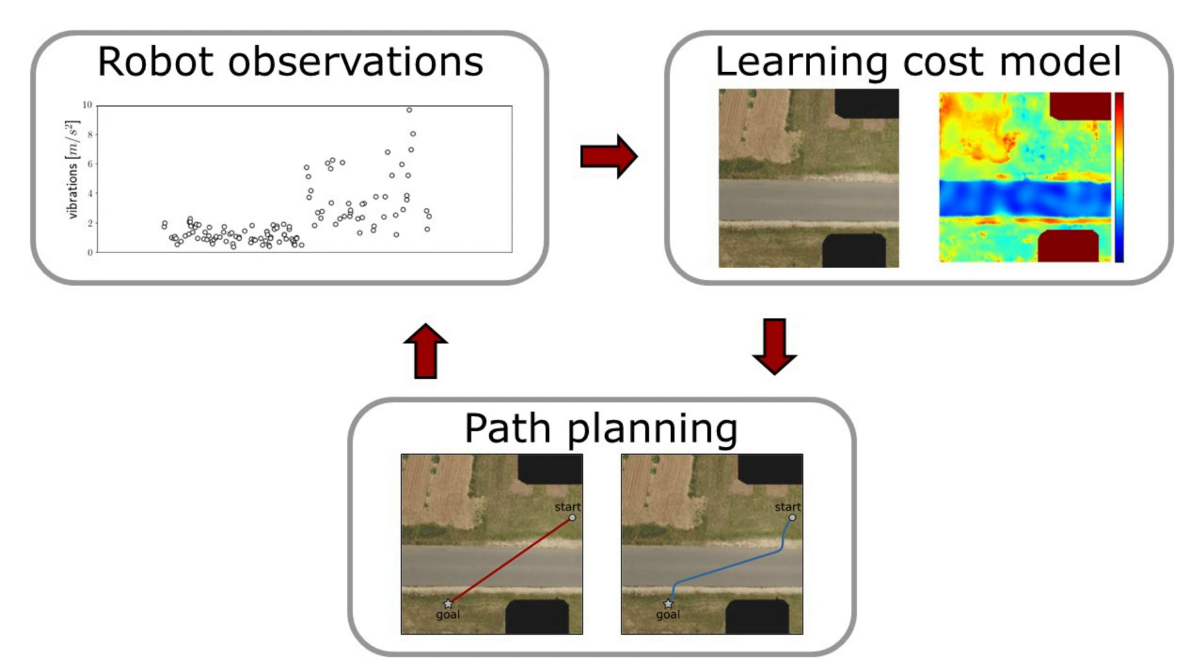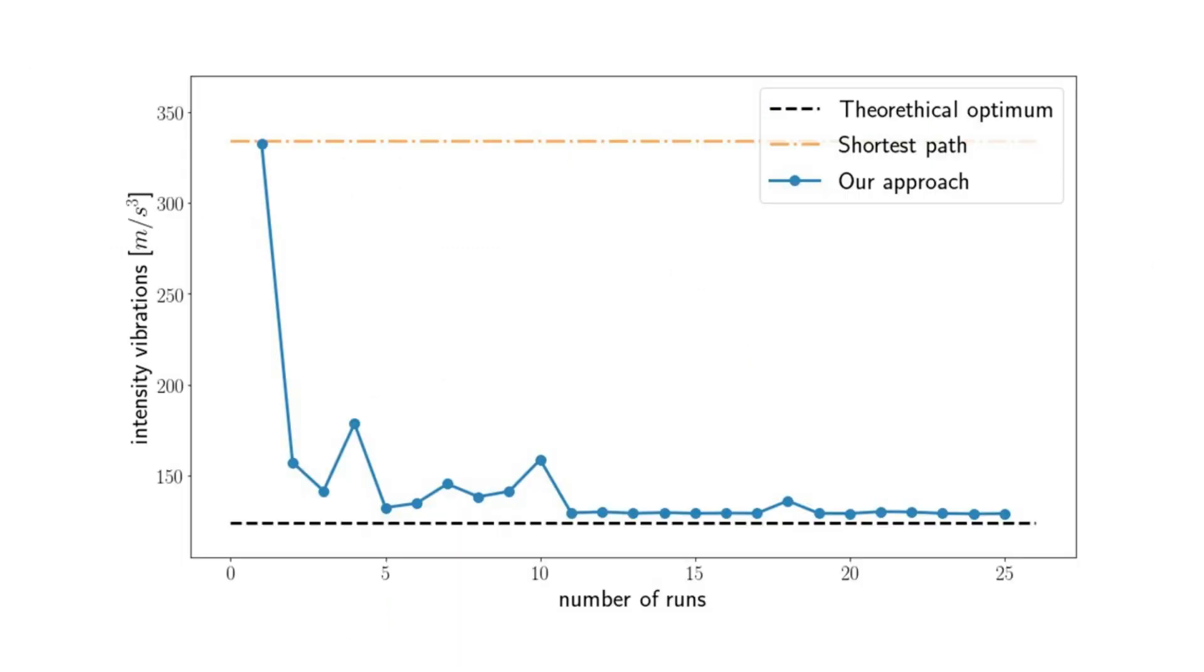We evaluated our approach by considering a robot that performs the same navigation task several times. We compared our approach to following the shortest path and to the theoretical optimal path computed given the ground-truth information about the vibrations in the environment.